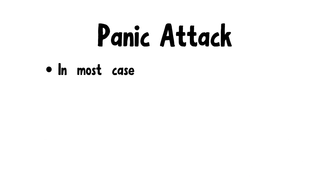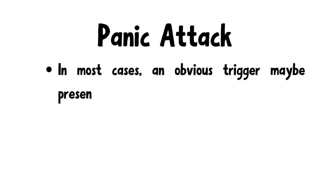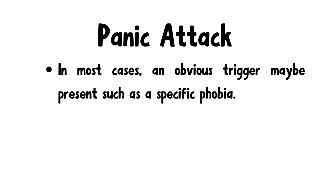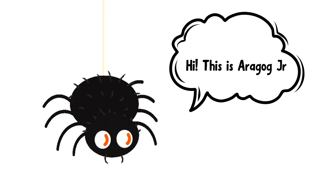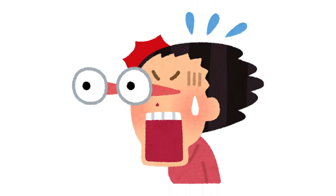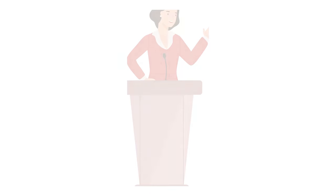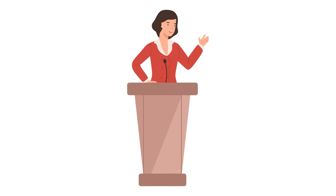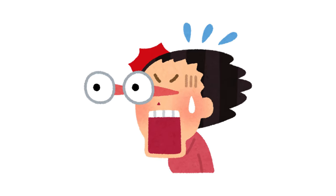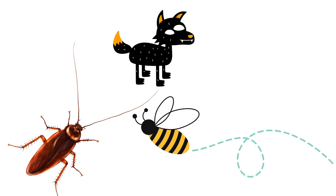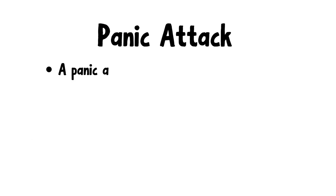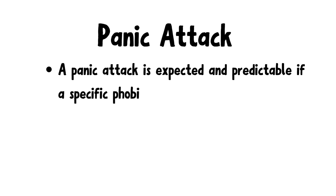In most cases, an obvious trigger may be present such as a specific phobia. For instance, if you're scared of cockroaches or spiders, you'll start to experience a panic attack out of fear for these animals. If you're scared of public speaking, you'll start to experience a panic attack right before you get on that stage to give a talk. So most of the time, a specific trigger is present, and as a result, a panic attack is expected and predictable, provided that a specific phobia is present.